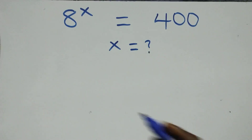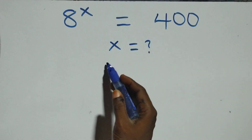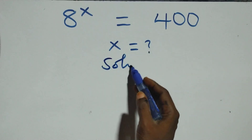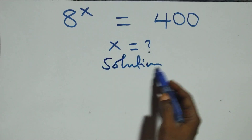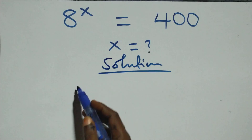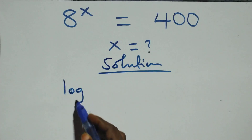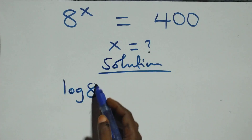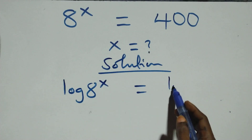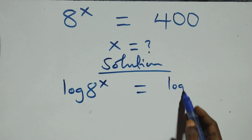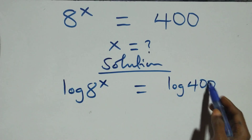Hello, you are welcome. How to solve this nice exponential equation. What do we have here? We take the log on both sides. We have log of x raised to the power x equals to log 400 on this side.